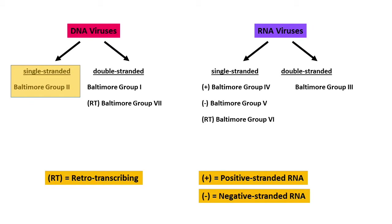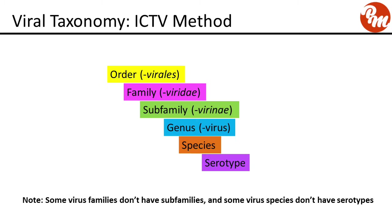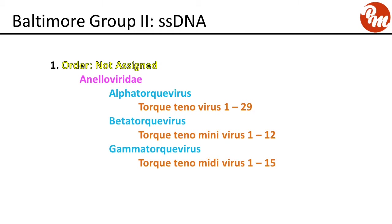Let's start with the DNA viruses single-stranded, or Baltimore Group 2. We're going to put them in the ICTV method, which starts with an order whose name ends in viralis, then family, subfamily if there is one, genus, species, and occasionally a serotype.